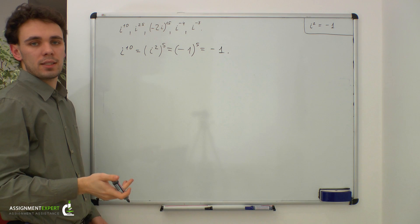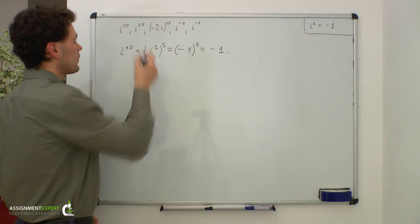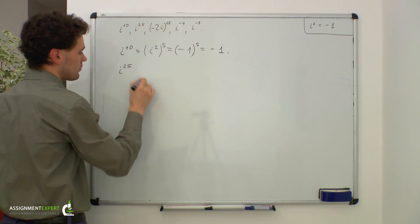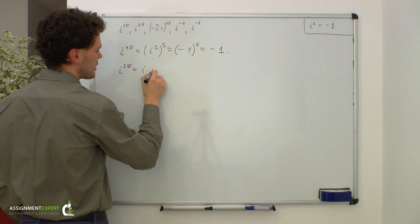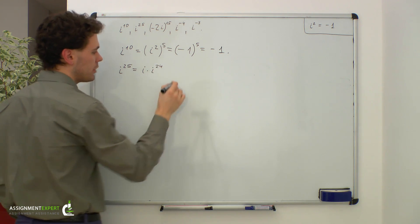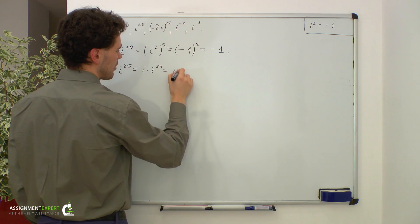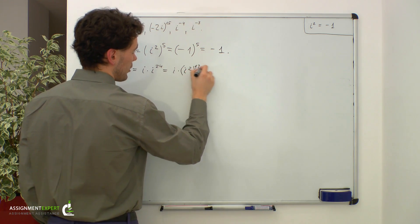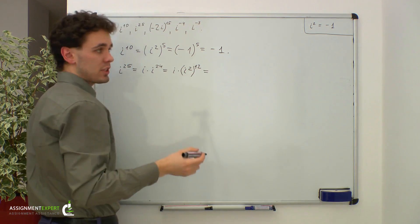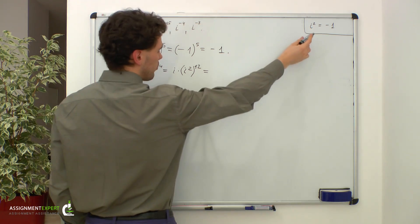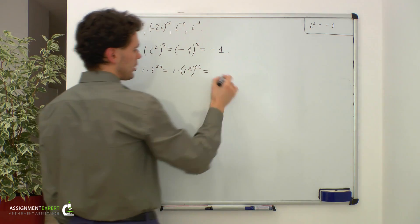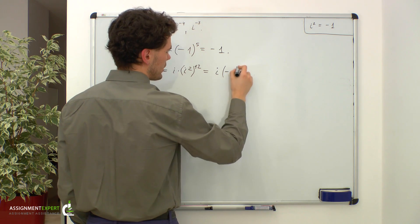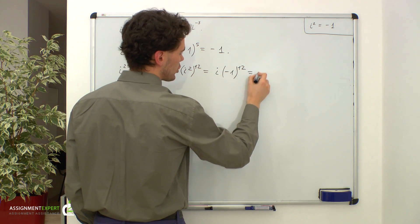Now let's consider odd power of i. i raised to the 25th power. It is equal to i times i raised to the 24th power, and gives us i times i squared raised to the 12th power. Now we substitute negative 1 instead of i squared and we get i times negative 1 raised to the 12th power, and this is equal to i.